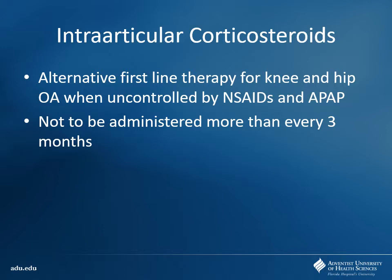We can do intraarticular corticosteroids. Triamcinolone is probably the most common one — basically injected right into the joint to deal with inflammation. This is good for both rheumatoid arthritis and osteoarthritis, especially knee and hip joints. It's good when uncontrolled by NSAIDs or acetaminophen alone. However, you don't want to use it too frequently — it can break down tissue, cause further joint damage, tendon atrophy. Not more than every three months; probably two to three times a year max for most patients.